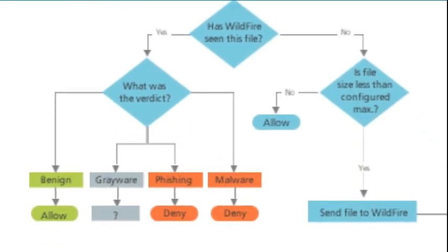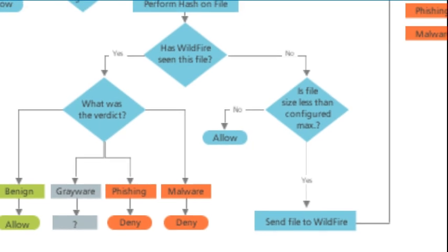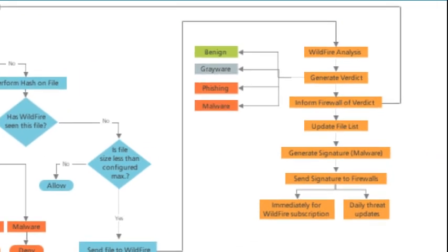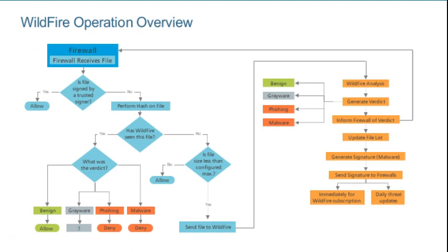If the file has been sent to Wildfire, then the previous verdict is used by the firewall. If the file has not been previously sent to Wildfire, then the firewall determines if the file size is less than the maximum firewall-to-Wildfire transmission size configured on the firewall. If the file exceeds the maximum size, then the firewall allows the file to be delivered and the file is not sent to Wildfire. If the file size is less than the configured maximum, then the file is sent to Wildfire for analysis. Wildfire analyzes the file and generates a verdict. The firewall is informed of the verdict. Wildfire then updates its file list and generates a malware signature. The signature is made available within minutes to Wildfire licensed firewalls around the world. Unlicensed firewalls can retrieve the new signature within 24 to 48 hours through normally scheduled content updates.